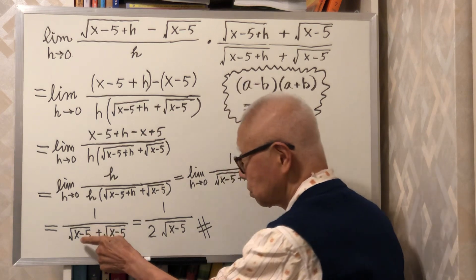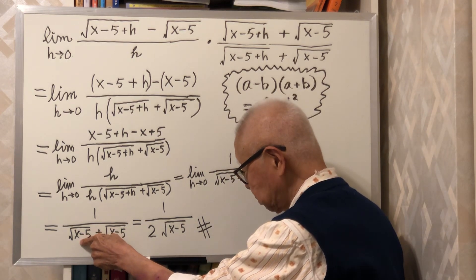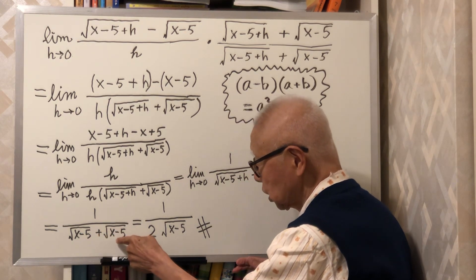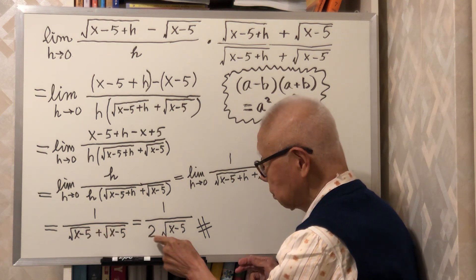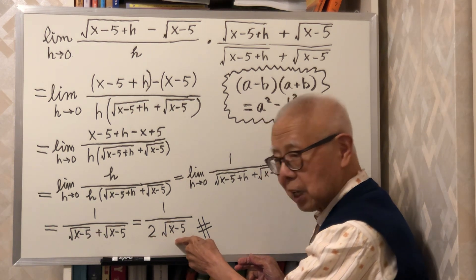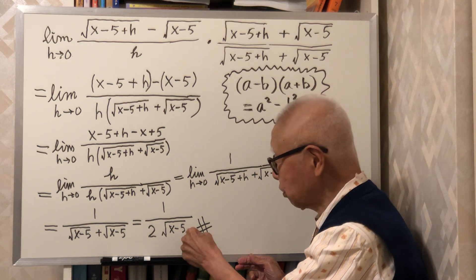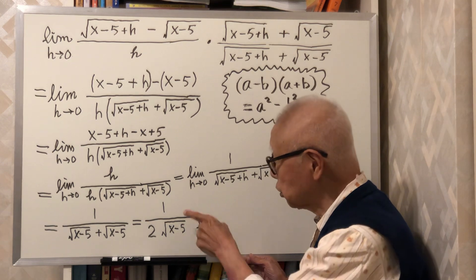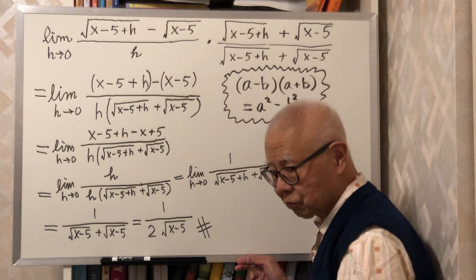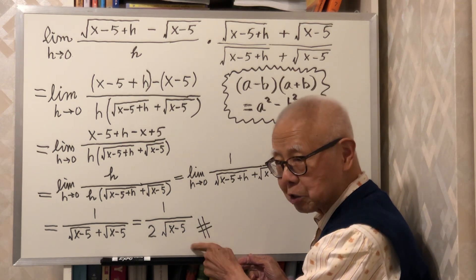So I have square root of (x - 5) plus another square root of (x - 5). You add them up, I get 2 times square root of (x - 5). And this part is in the denominator. The numerator is 1. This is my final result.